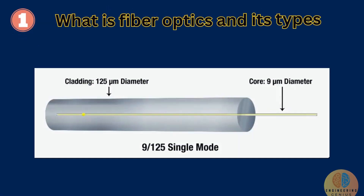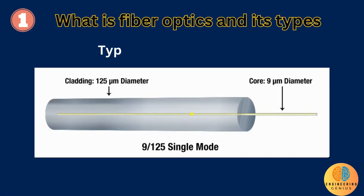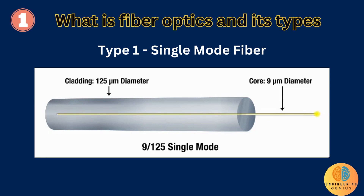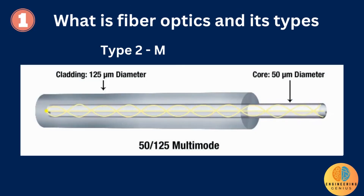Fiber optics networks operate on either single-mode or multi-mode fiber. Single-mode fiber is used for longer distances due to the smaller diameter of the glass fiber core. This smaller diameter lessens the possibility of attenuation, so the signal can travel a long distance as a single beam. Multi-mode fiber is used for shorter distances because the larger core opening enables light signals to bounce and reflect more along the way. The larger diameter permits multiple light pulses to be sent through the cable at one time, which results in more data transmission but also more possibility for signal loss.